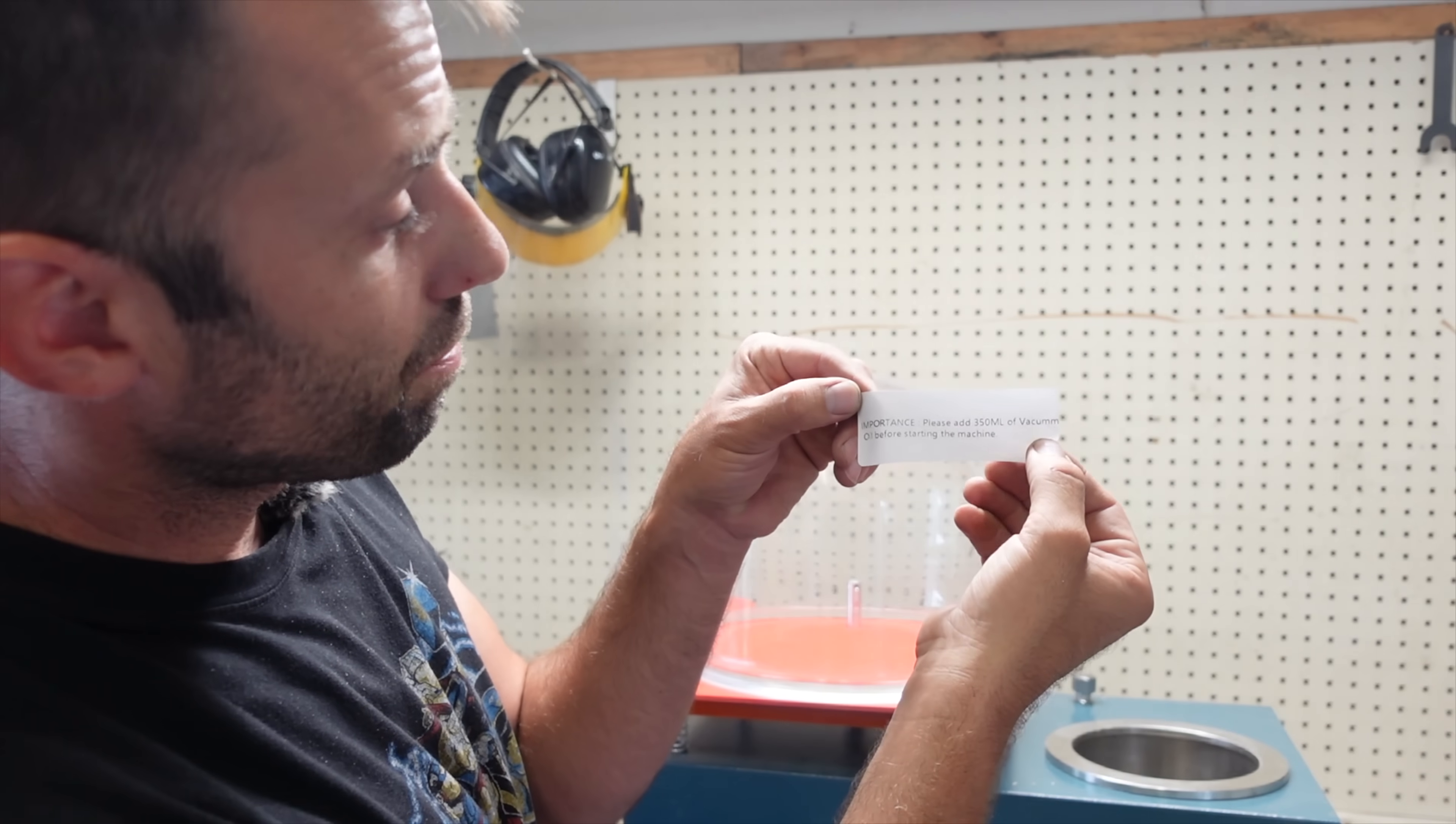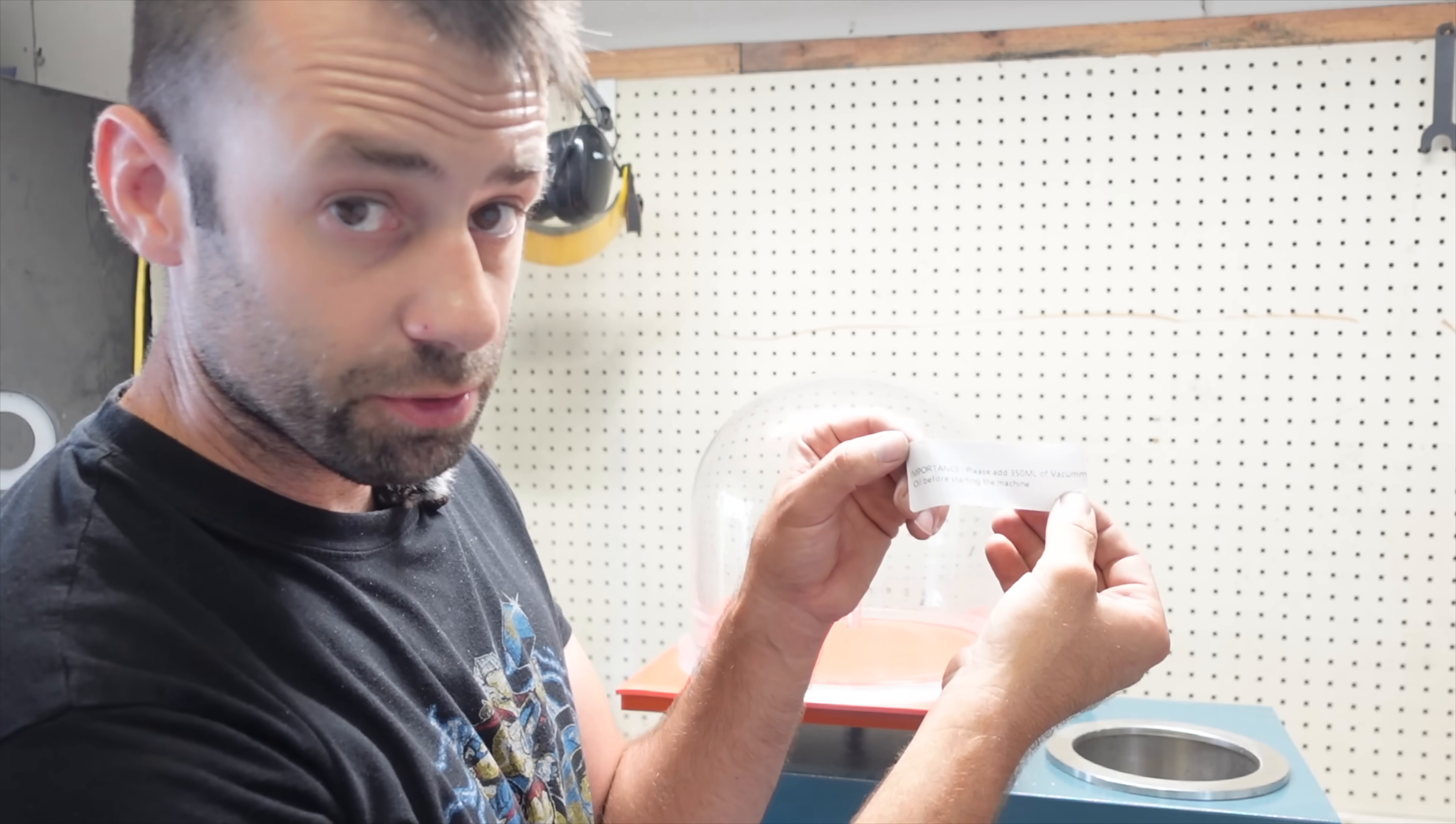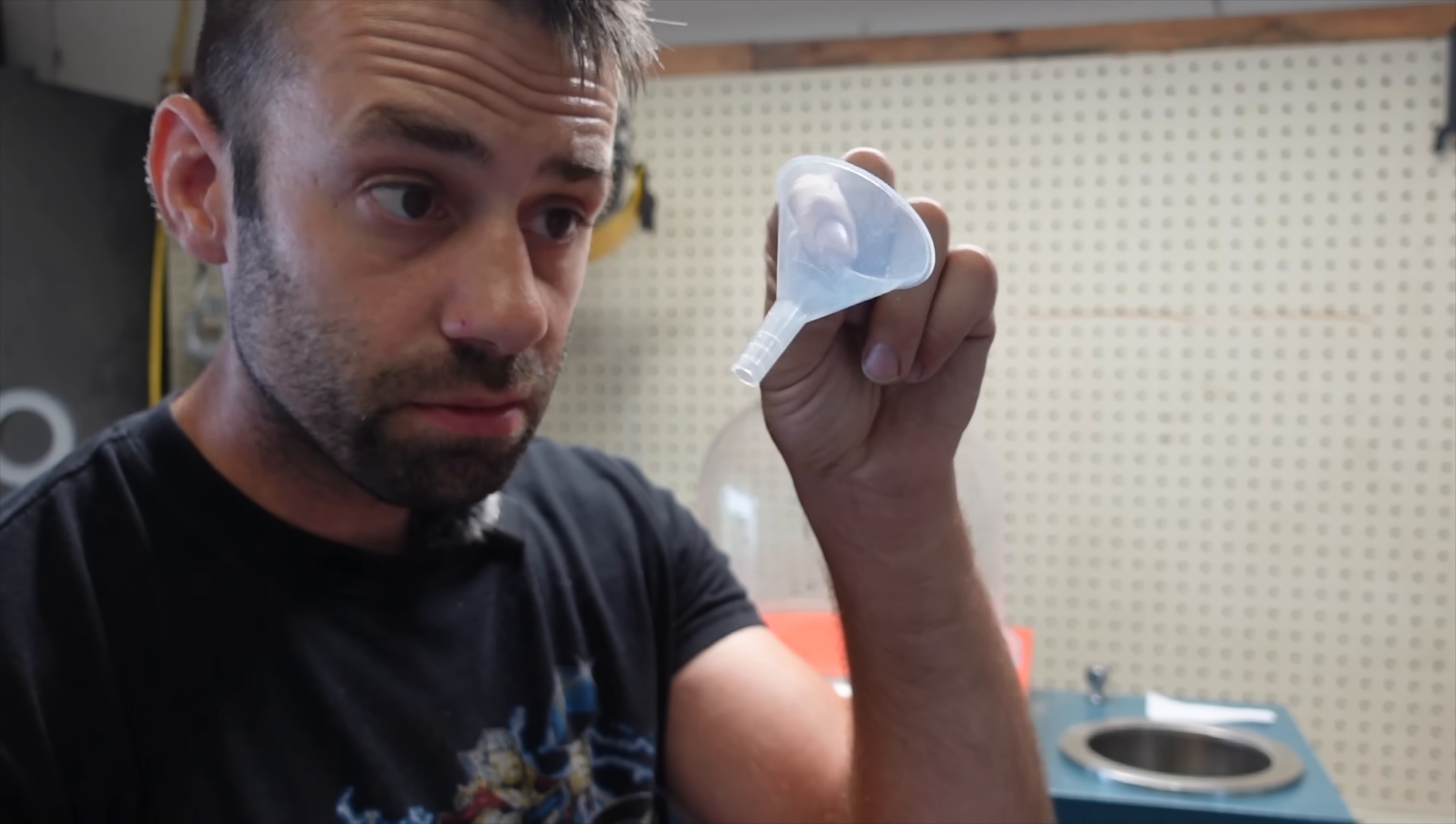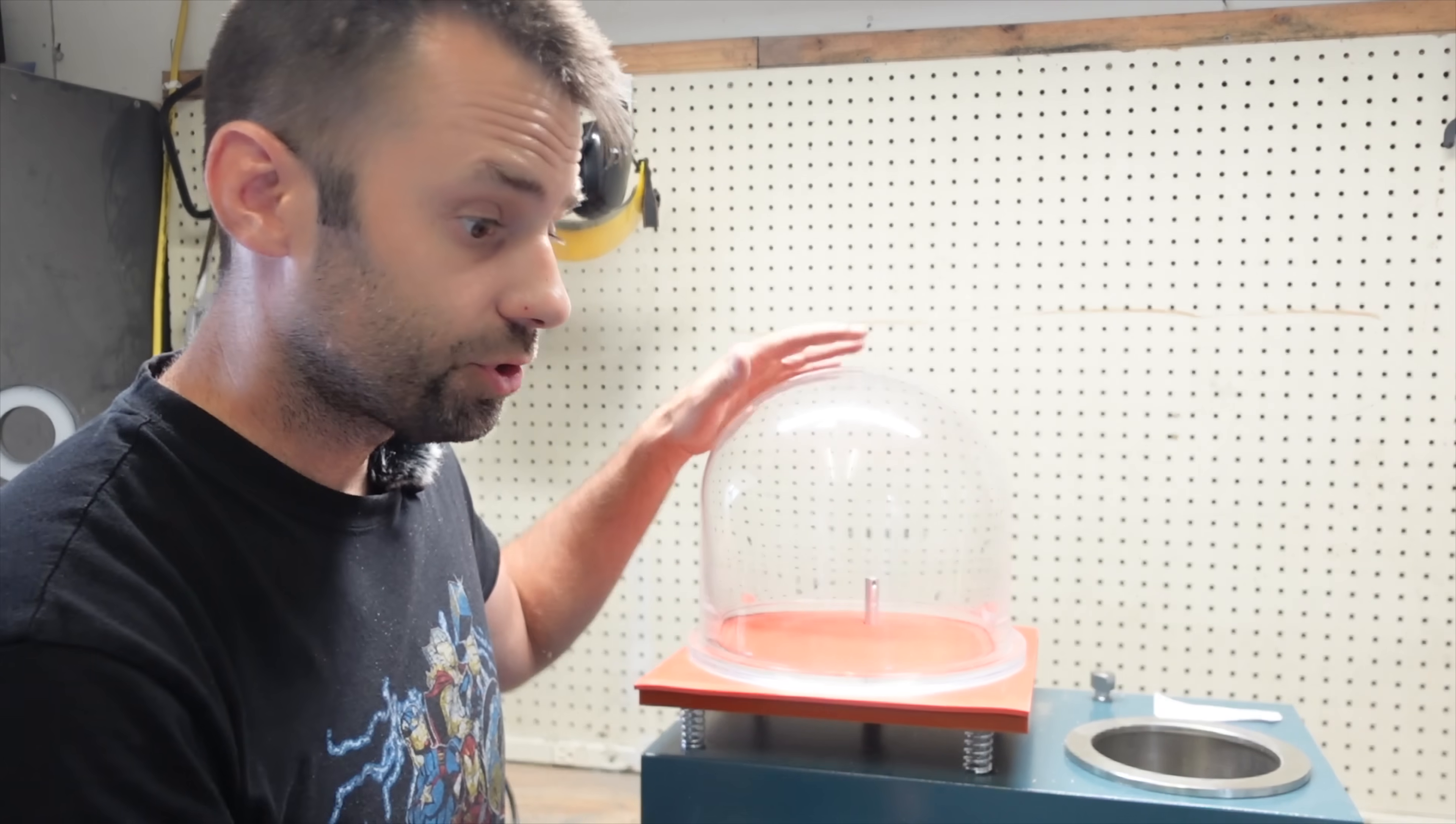The sticker on here says please add 350 milliliters of vacuum oil before starting machine. I didn't get any vacuum oil with it. Came with a little funnel but no oil. So I don't know if it's supposed to come but I didn't get any so I have to get some.